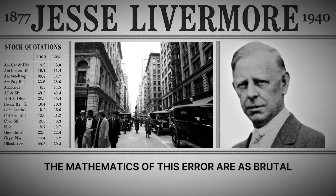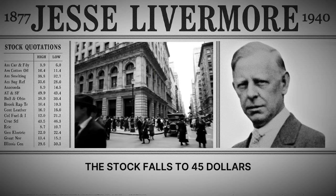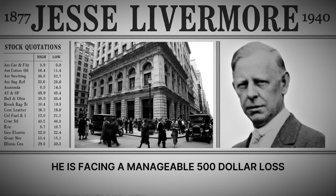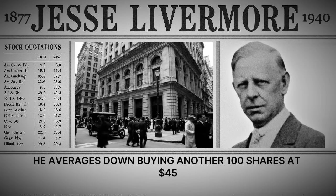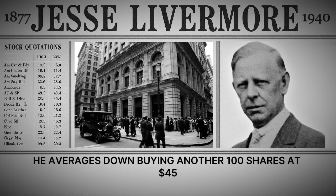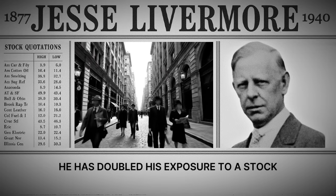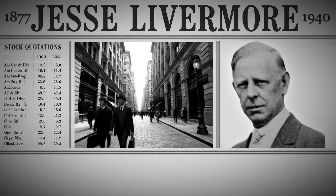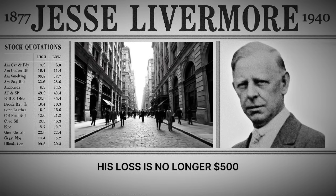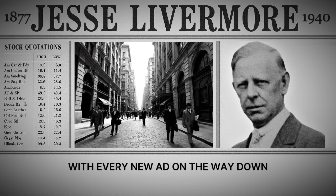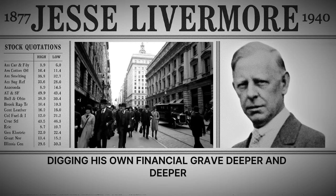The mathematics of this error are as brutal as the psychology is flawed. A trader buys 100 shares at $50. The stock falls to $45 — a manageable $500 loss. But instead of accepting this small tactical defeat, he averages down, buying another 100 shares at $45. His average cost is now $47.50. He has doubled his exposure to a stock that has already proven itself weak. If the stock falls just another five points to $40, his loss is no longer $500 — it is now $1,500. With every new add on the way down, he is not reducing his risk; he is multiplying it, digging his own financial grave deeper and deeper.